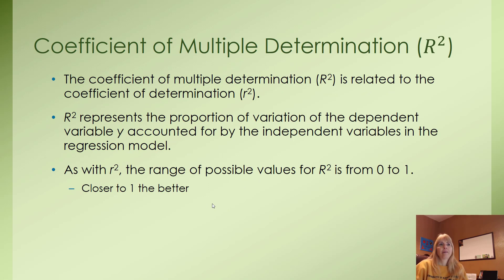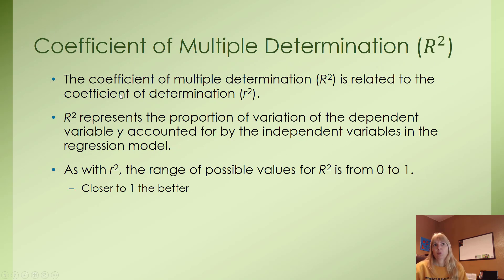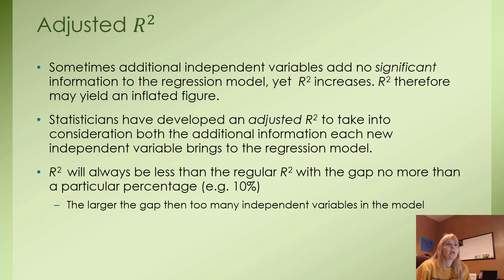We're going to look at the coefficient of multiple determination, R². This is related to what we looked at in our simple regression model, the coefficient of determination. Same thing: it's between zero and one, the closer to one the better and the stronger our model is. This represents the proportion of variation of our dependent variable y accounted for by however many independent variables we have in our model. You're going to see R² in Excel.